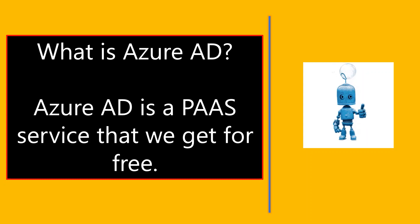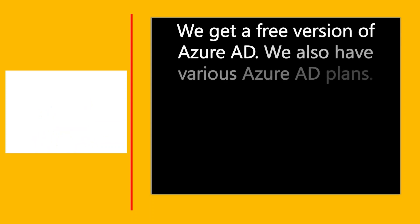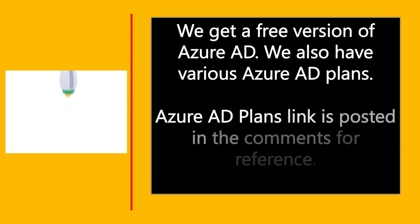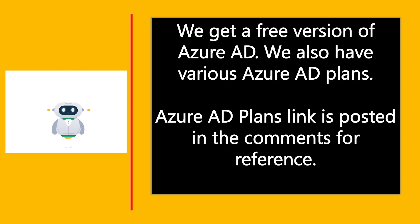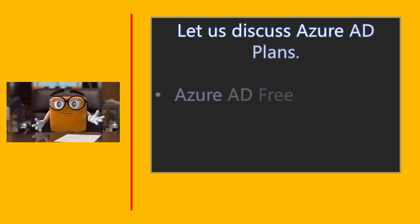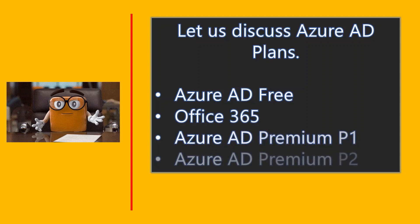With a free trial account we get the Azure AD free version. There are also different types of Azure AD versions available in the purchased versions. I'm going to paste a link in the comment section for your reference. The types of Azure AD plans are: Azure AD Free, Office 365, Azure AD Premium 1, and Azure AD Premium 2. The Office 365, Premium 1, and Premium 2 are enterprise licenses in the purchased versions, while Azure AD Free comes with free trial accounts.